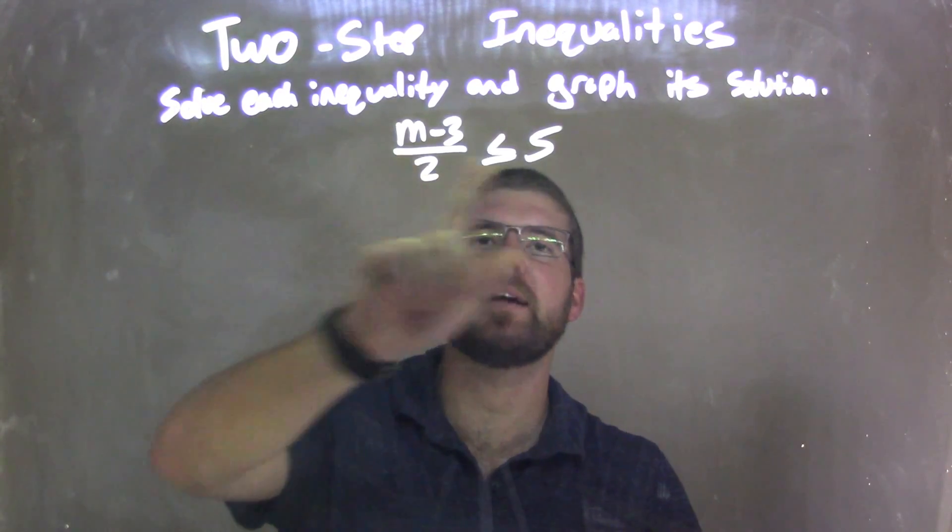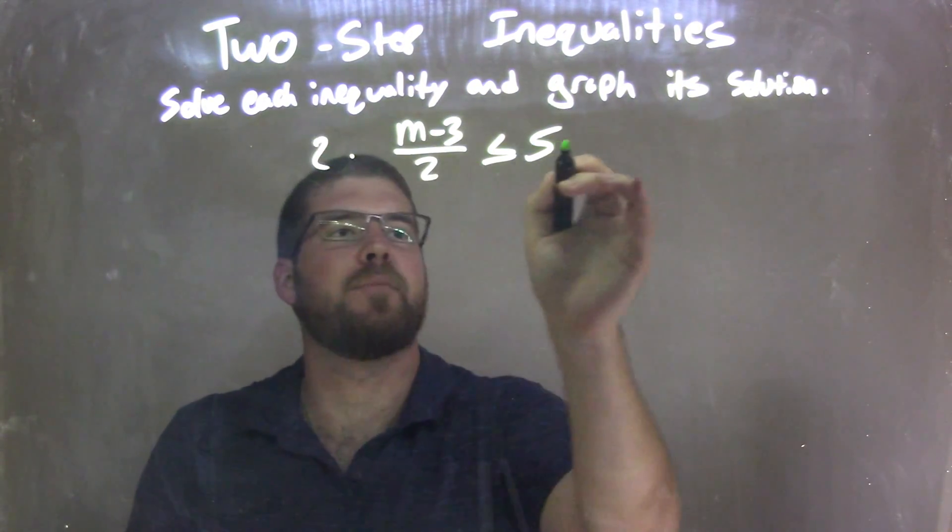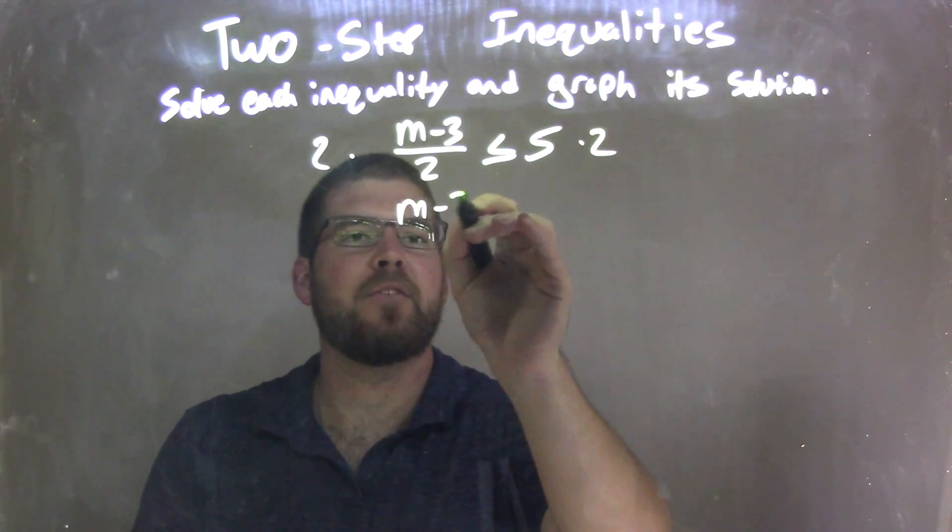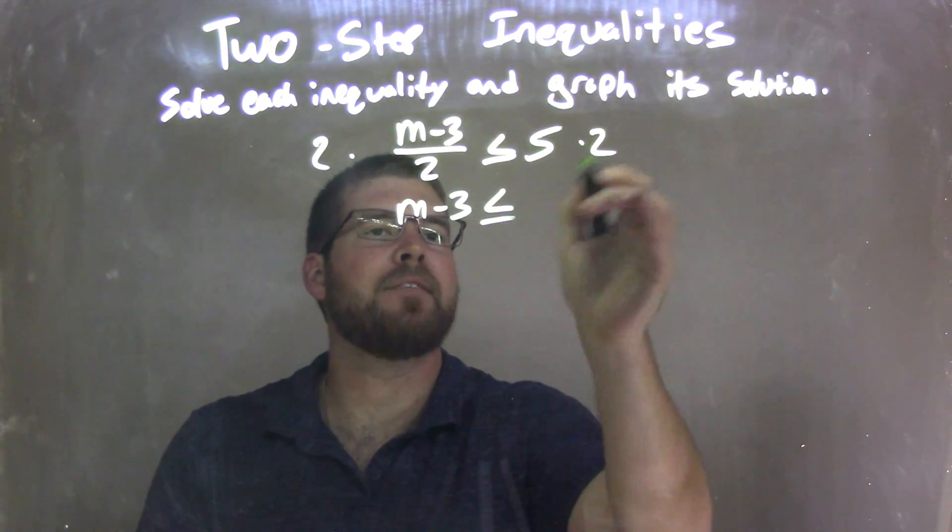My first step is I'm going to multiply 2 to both sides. So I multiply both sides by 2, giving me m minus 3 on the left is less than or equal to 5 times 2, which is 10.